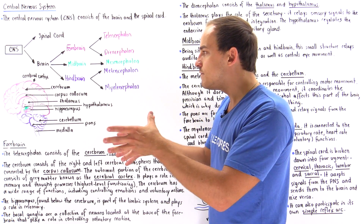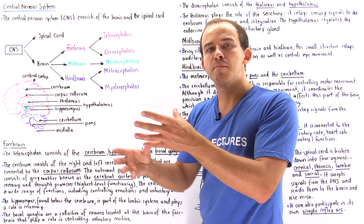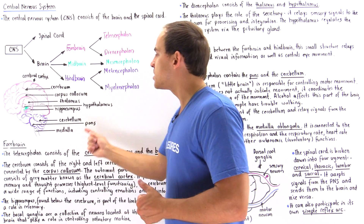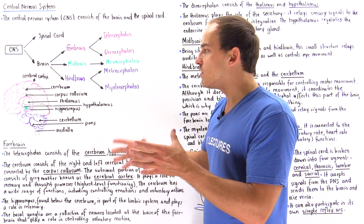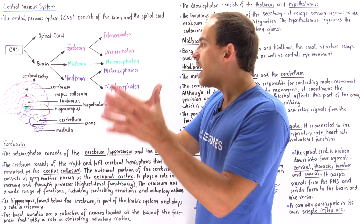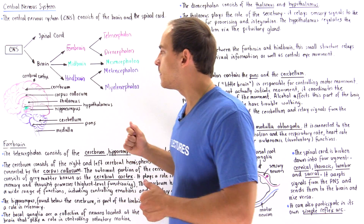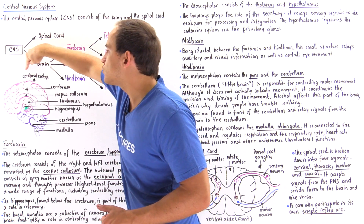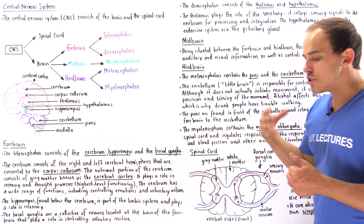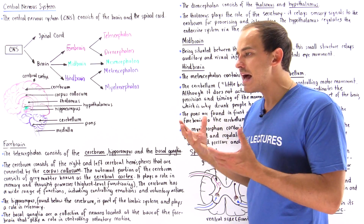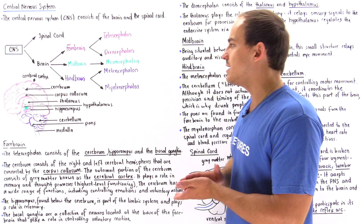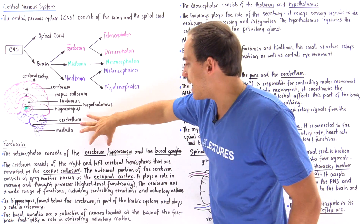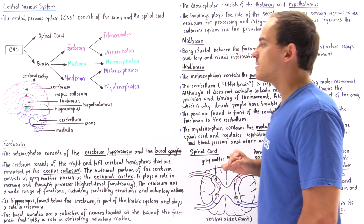The left and right hemispheres inside the cerebrum are connected by a bridge called the corpus callosum — a network of myelinated cells that connects the left to the right hemisphere. The outermost and topmost portion of the cerebrum is known as the cerebral cortex, where higher-level functioning processes take place. That completes the telencephalon, which contains the cerebrum, hippocampus, and basal ganglia.